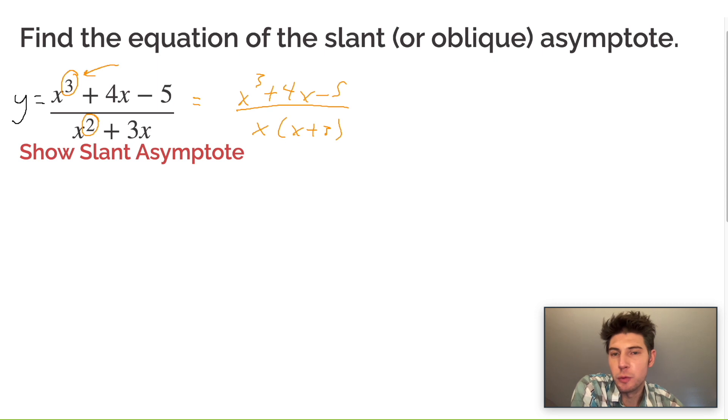The way you solve these is with long division, polynomial long division. So we're going to have our x cubed plus 4x minus 5 divided by x squared plus 3x.